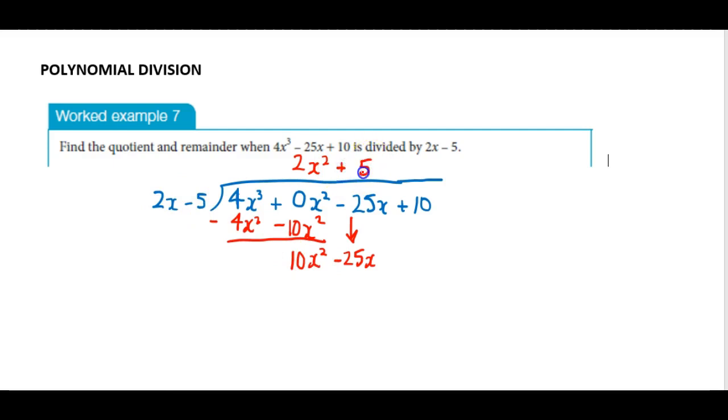And we keep that lined up in the x column. And then we multiply positive 5x by the divisor. Positive 5x times 2x gives us the 10x² that we want to eliminate.